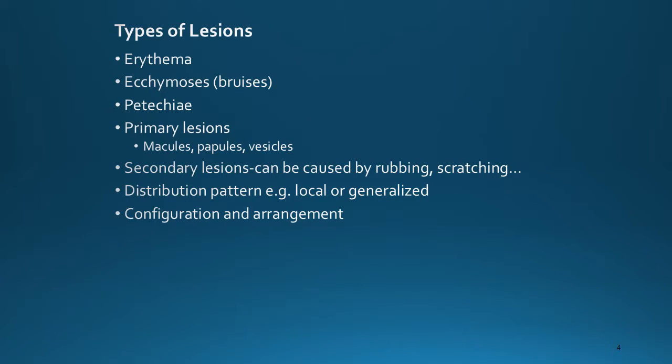Types of lesions might include erythema, ecchymosis or bruises, and petechiae. The primary lesions may be macules, papules, or vesicles. Secondary lesions can develop from the rubbing and scratching. We can also describe a distribution pattern such as being localized or generalized, and in addition describe the configuration and arrangement of lesions.